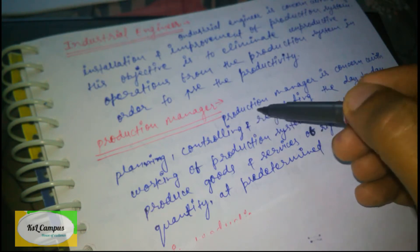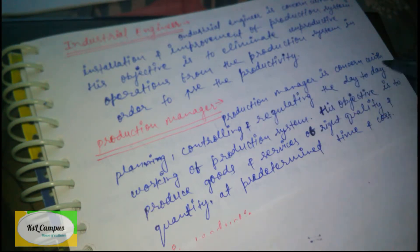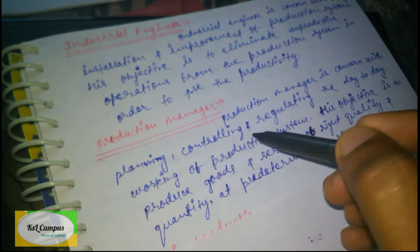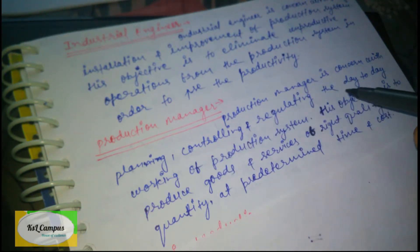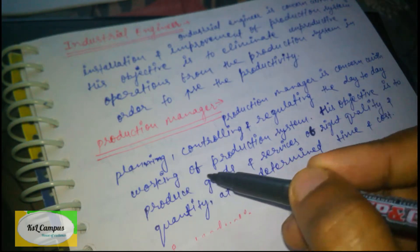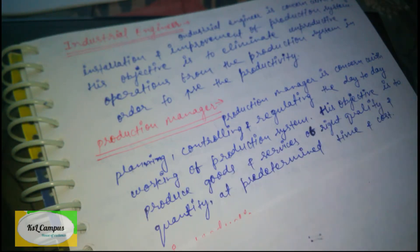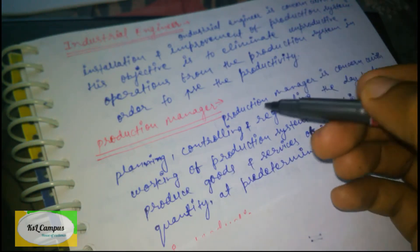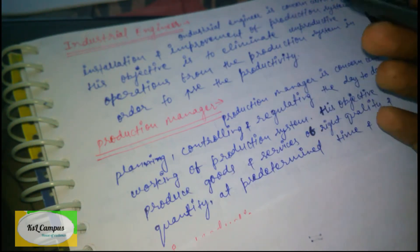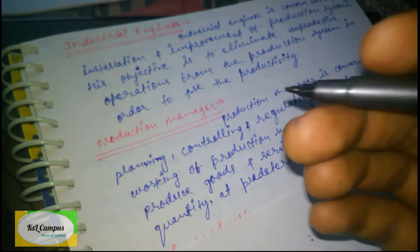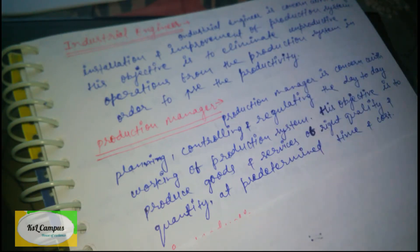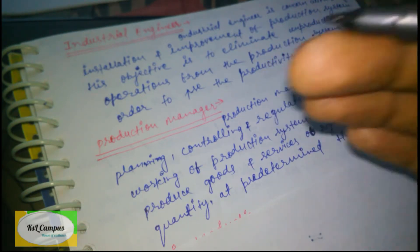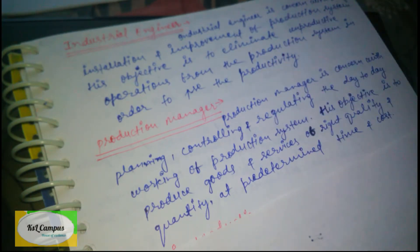The Production Manager is responsible for overall planning, controlling, and regulating the day-to-day working of the production system. He plans, controls — how much material to order, what to schedule, what needs to be done, where, and how much raw material to send.